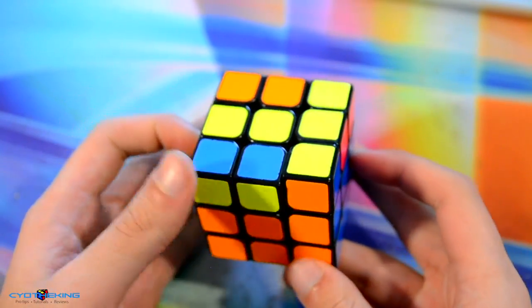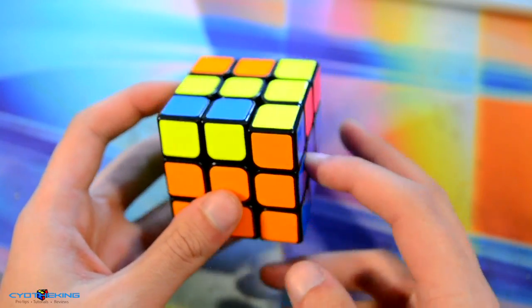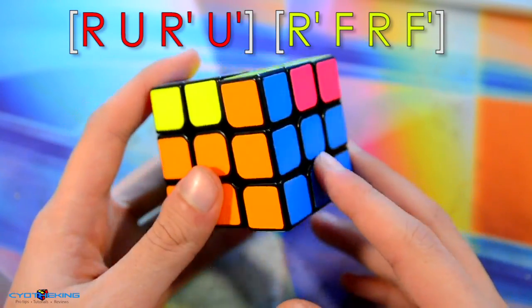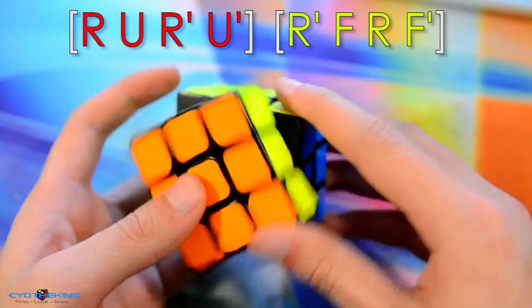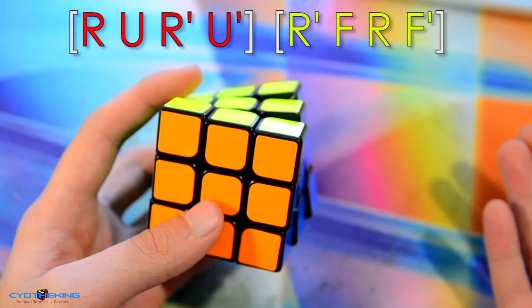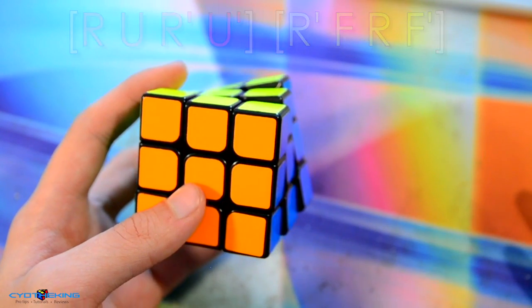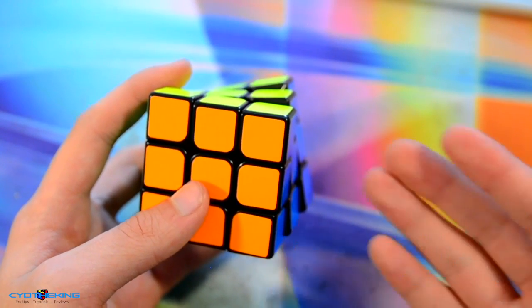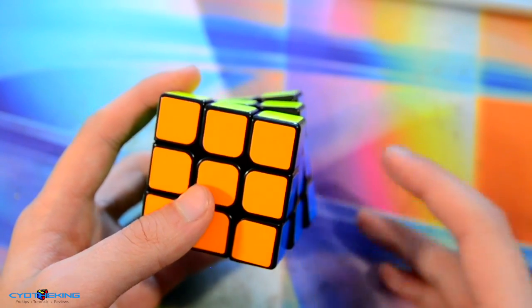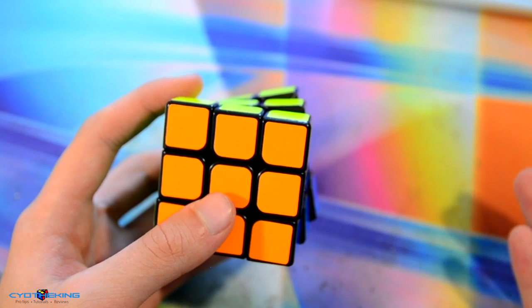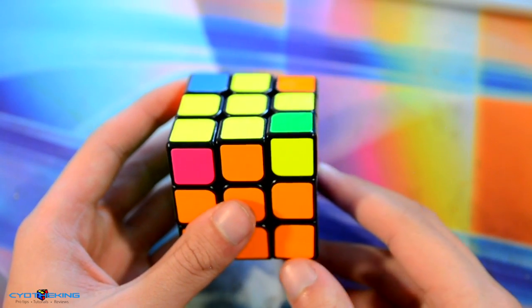Another good example of an alg that's just a bunch of triggers is this one right here. This alg is just two triggers put together: it's a sexy move followed by a sledgehammer. So if you know sexy move and sledgehammer, that alg is incredibly easy to learn. All you need to remember is two triggers instead of remembering eight different moves. Breaking your algs down into triggers helps a lot.